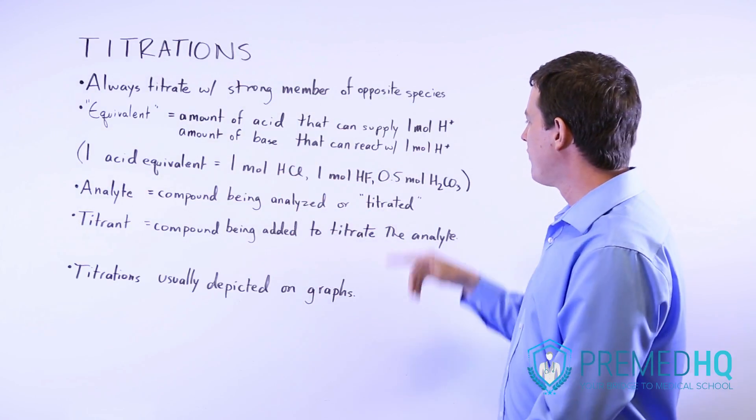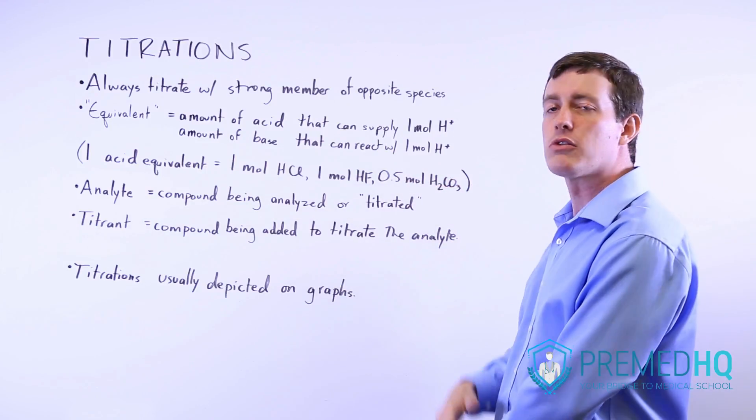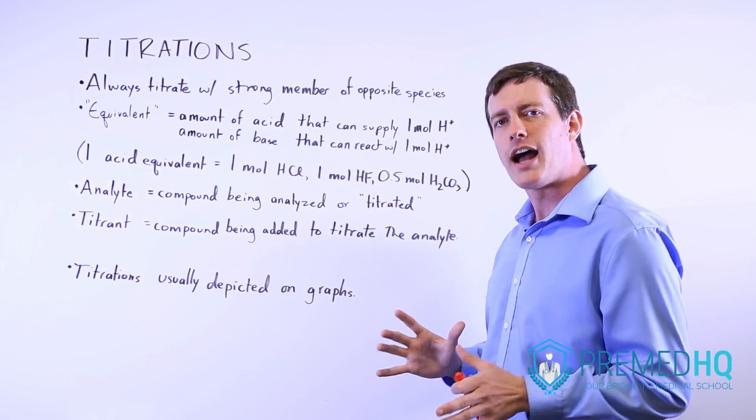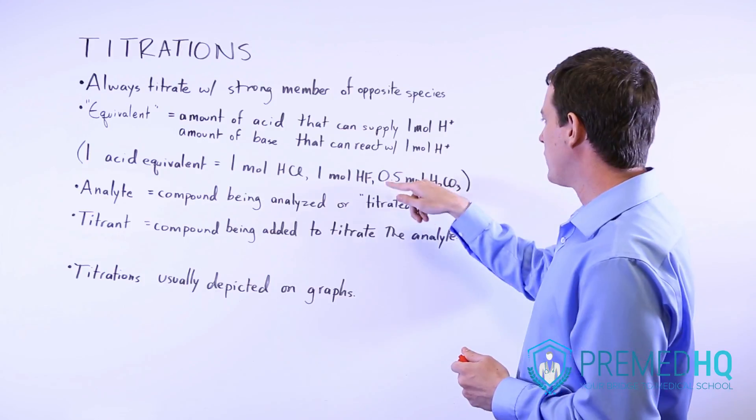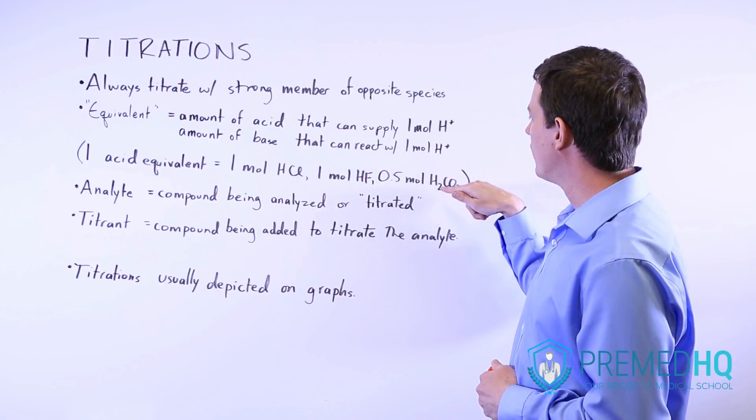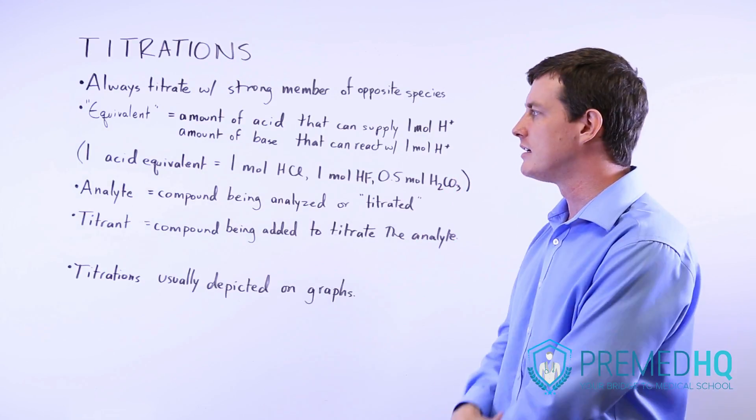If you have half a mole of carbonic acid, H2CO3, then that also qualifies as an equivalent of acid because of the fact that within this half mole of carbonic acid, there are exactly one mole of protons that will be yielded.